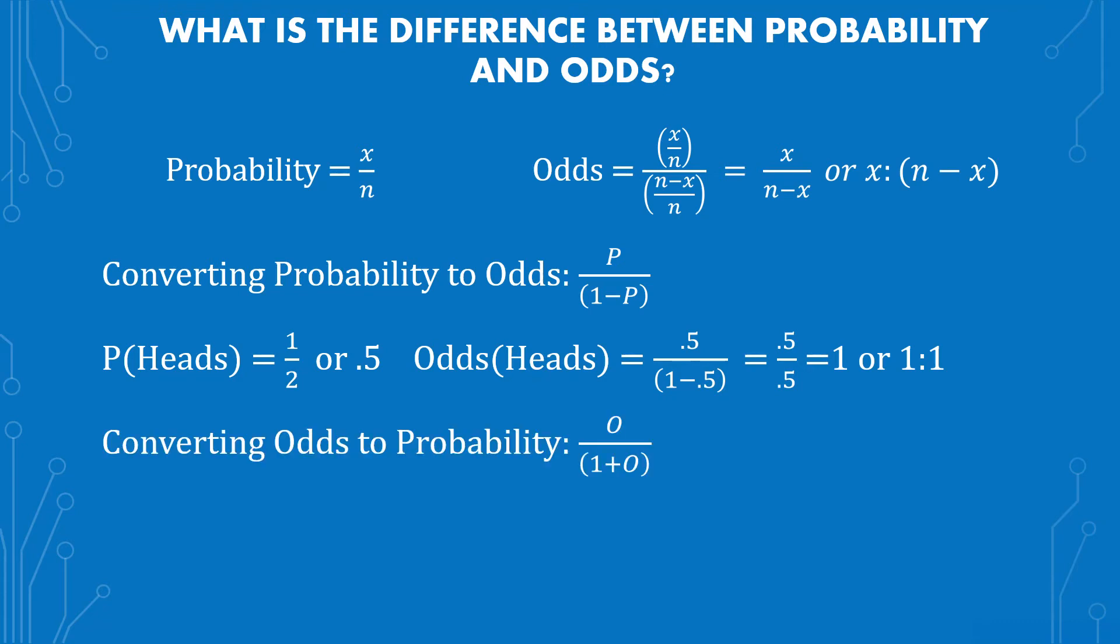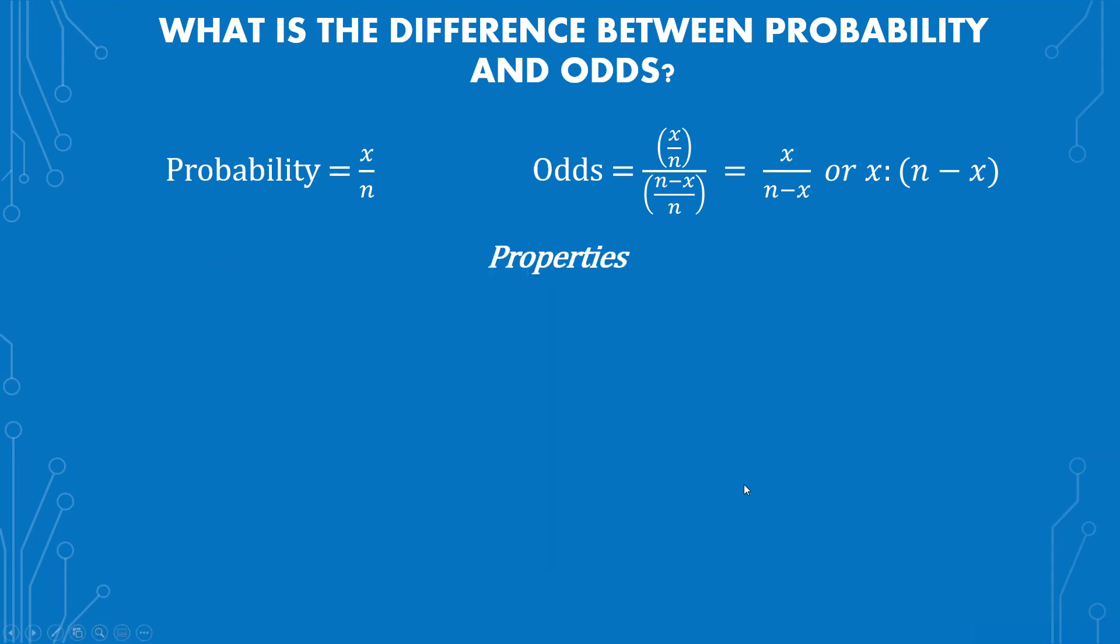For converting odds to probability, we have the odds divided by 1 plus the odds. So when it comes to the odds of heads, we know that the odds of heads is 1. The probability of heads with the formula here is the odds of heads of 1 over 1 plus the odds of heads of 1, which gives you 1 over 2, or 0.5 or 50%. The last thing I want to go over is the properties.